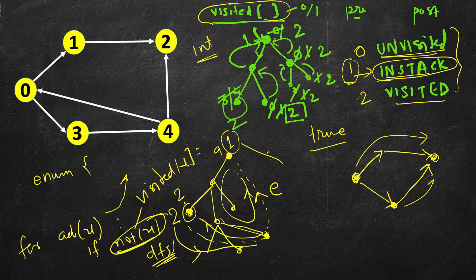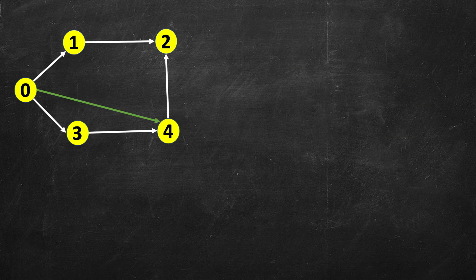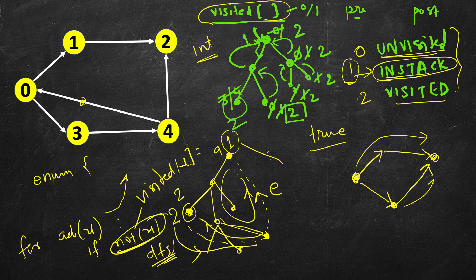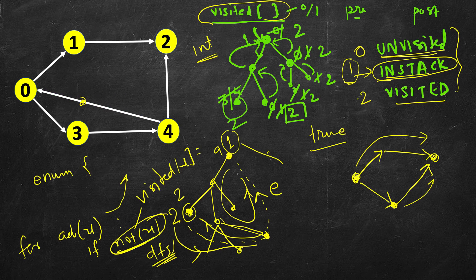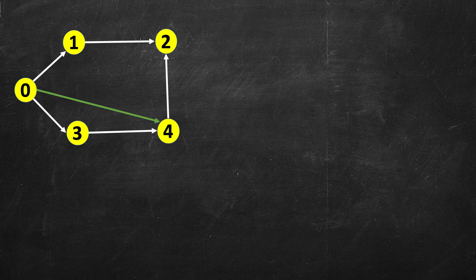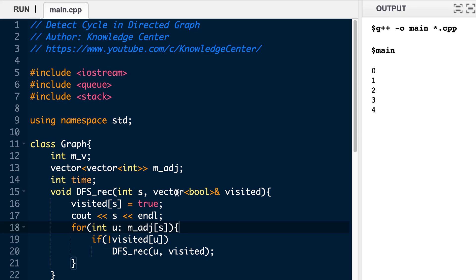If we reverse one edge, there will be no cycle — as in the second example. Let's write the code: we do a slight modification, run it on the first graph which should return true (cycle exists), then modify it for the second graph which should return false.